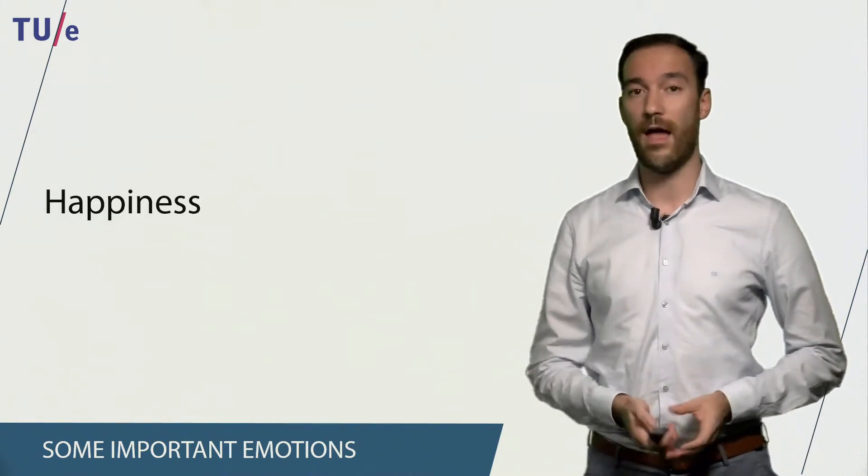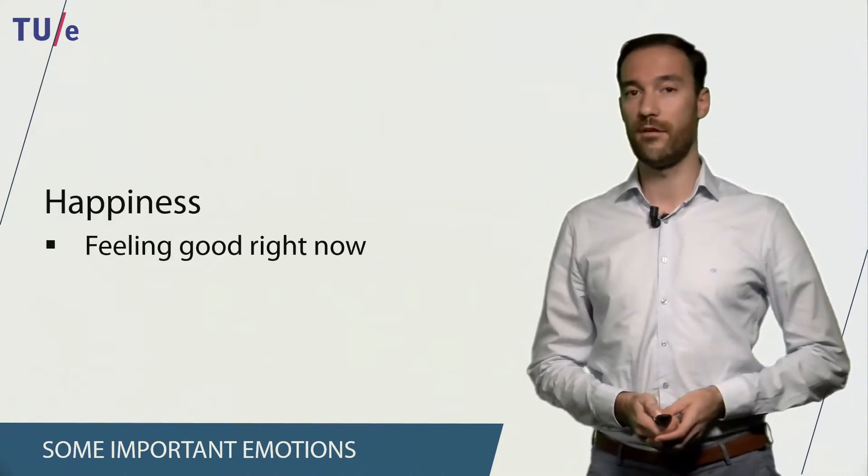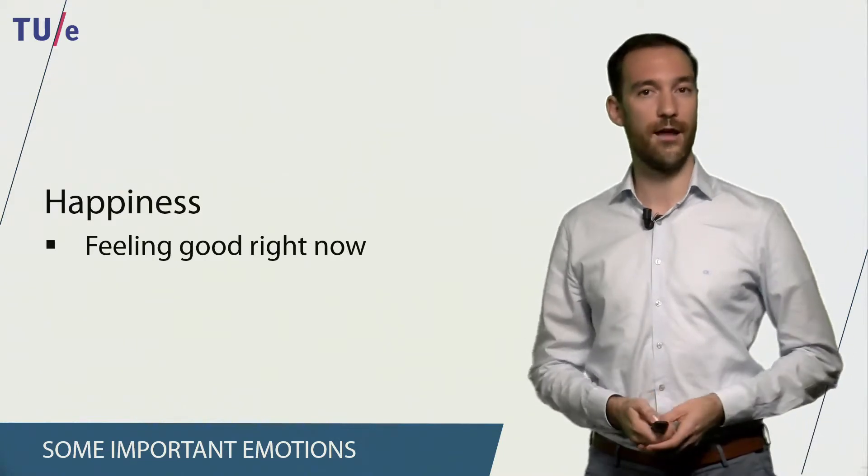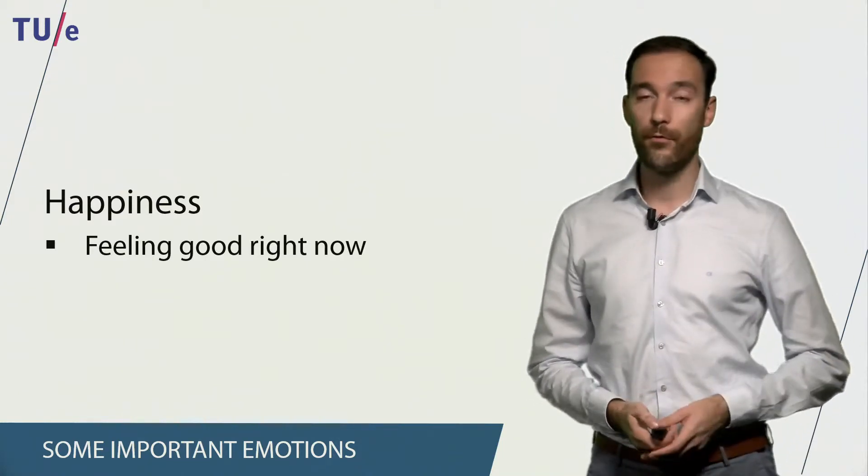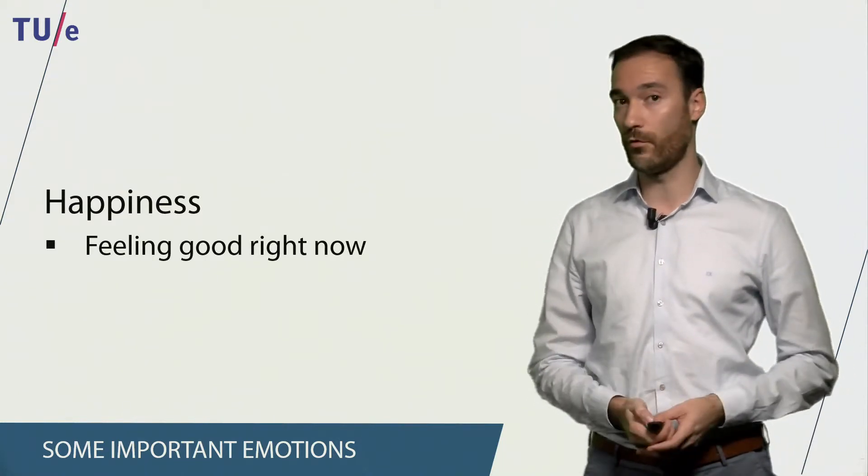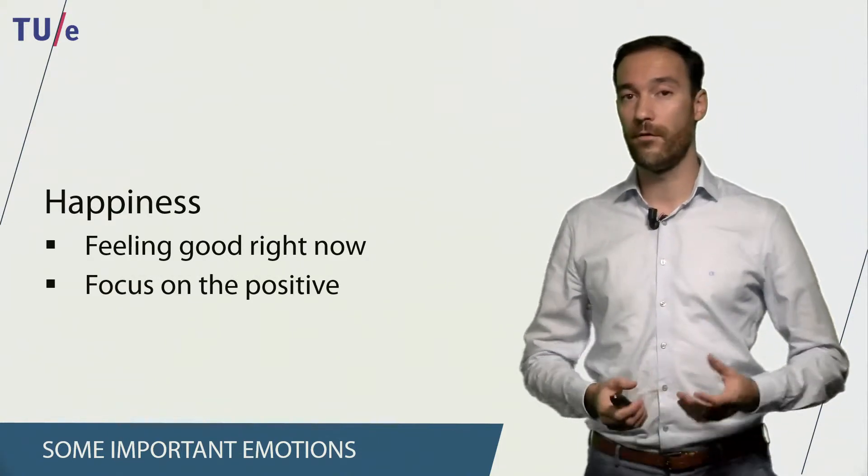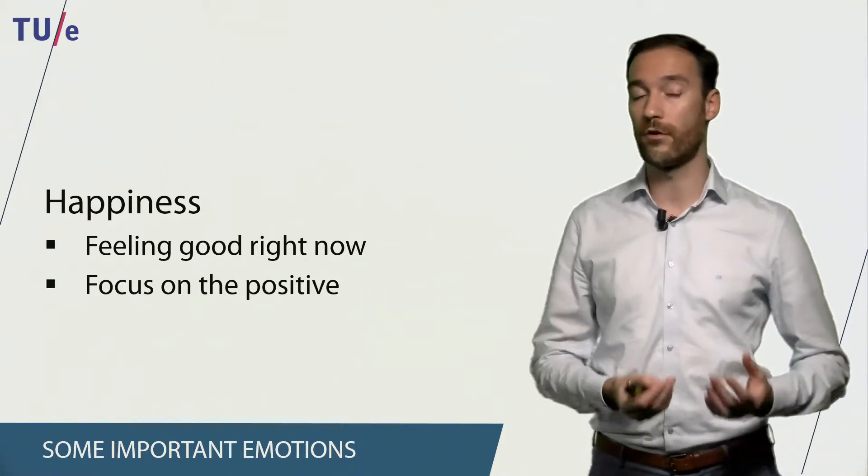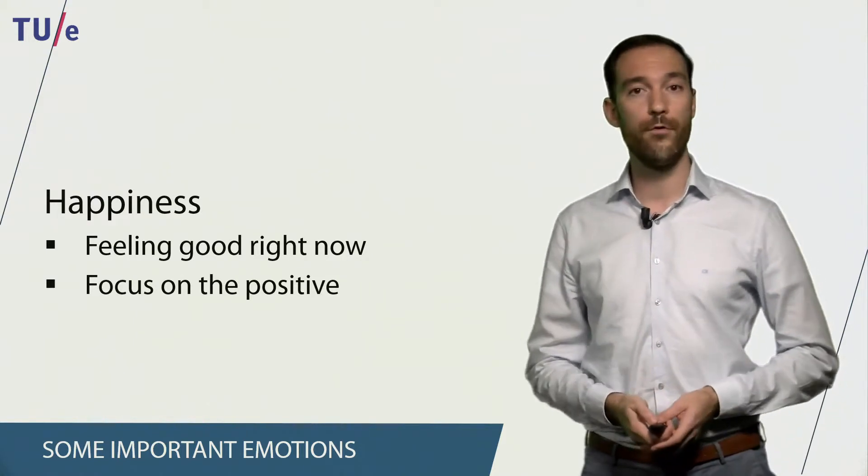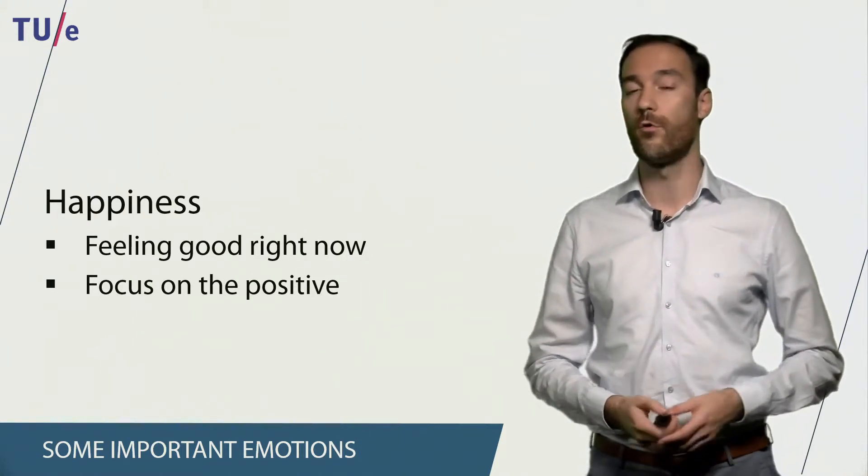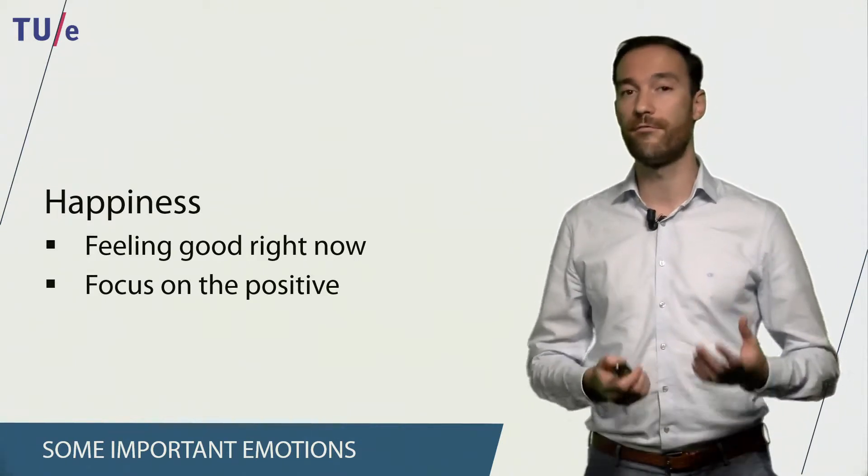The first of these emotions is happiness. Happiness can be described as feeling good right now. And if you ask people to describe what makes them feel good right now, they always focus on positive things. Some people feel very good about having a good house or a nice car, whereas other people focus more on experiences, like going on a nice holiday or being friends with people.